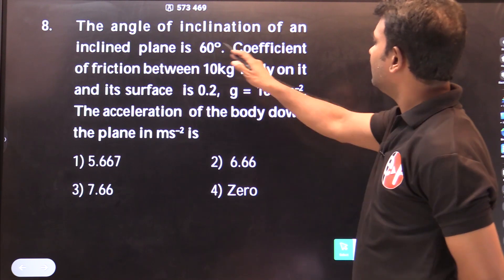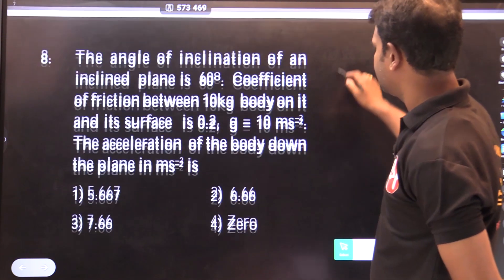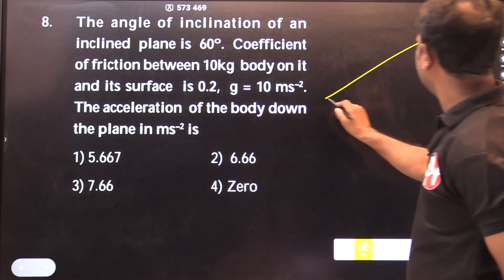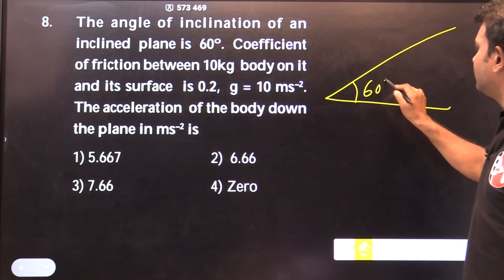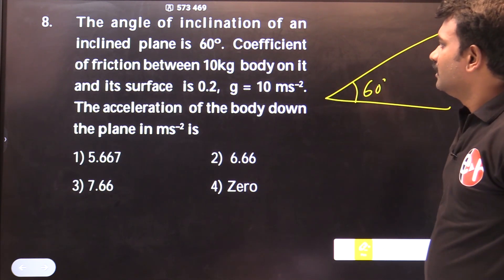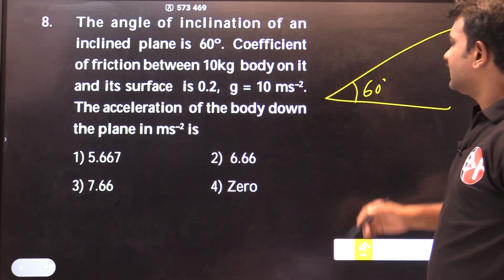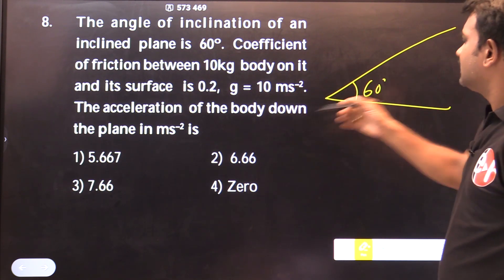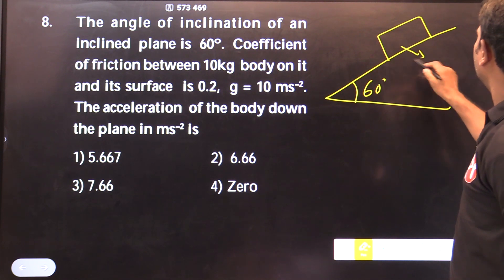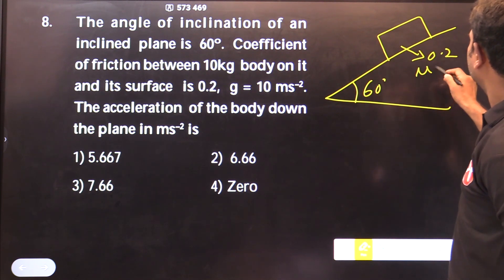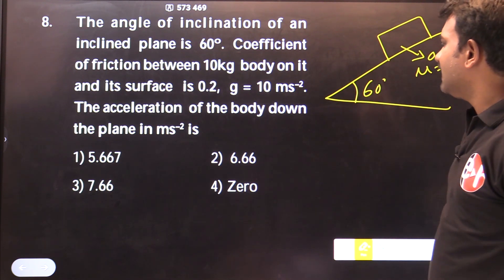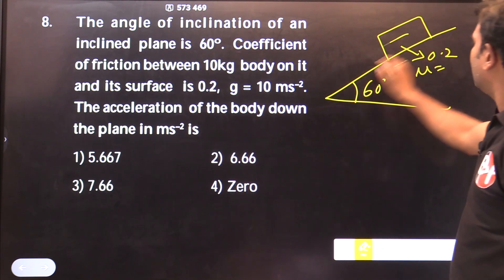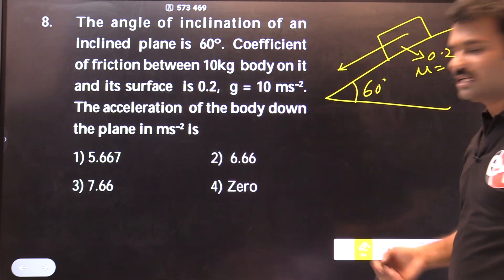The angle of inclination of the inclined plane is 60 degrees, and the coefficient of friction between the 10kg body on it and its surface is 0.2. The acceleration of the body is downwards.